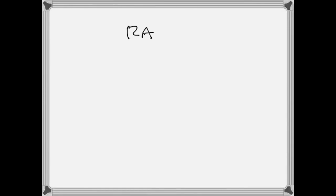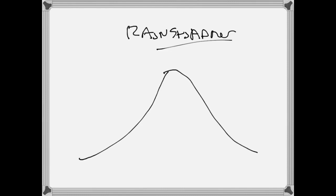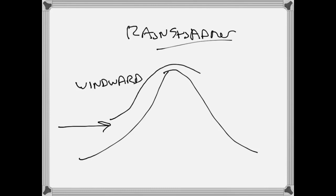The rain shadow effect — what is it and what causes it? Well, let's say we've got a mountain range and we've got air flowing toward it. We would call this side of the mountain the windward side, and as the air continues to flow over the mountain and go down the other side, we would call that side the leeward side.